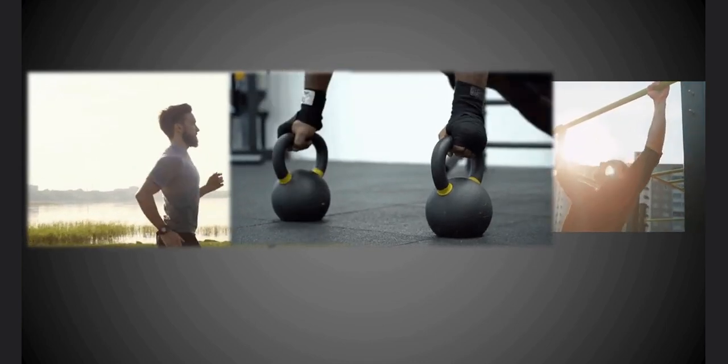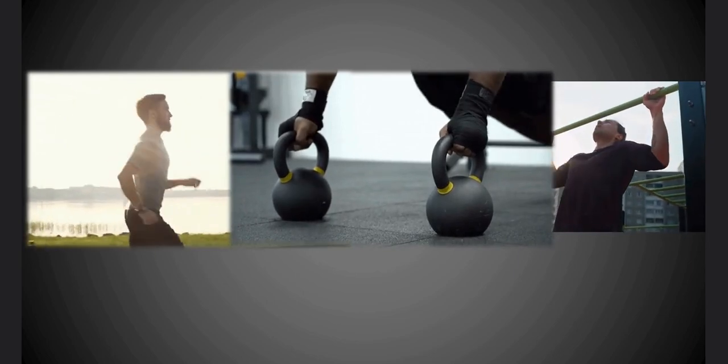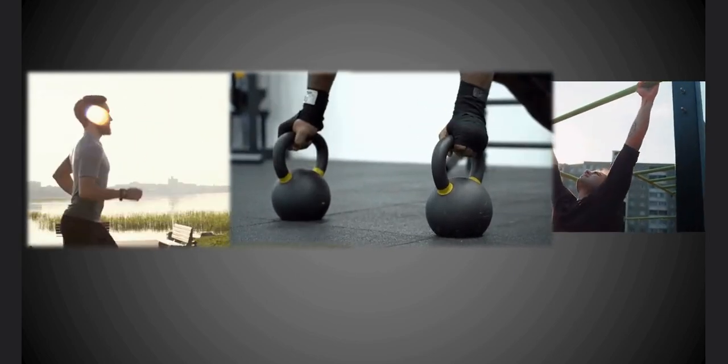It's observed that three 30-minute bouts of exercise separated by 1 to 3.5 hours result in a 60% increase in 24-hour GH secretion.